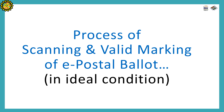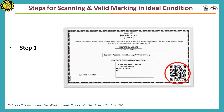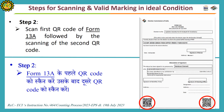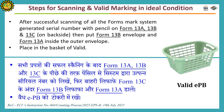Process of scanning and valid marking of E-Poster Ballot in ideal condition. First, scan the QR code of the outer envelope, that is form 13C. Open it and take out form 13A and form 13B. Then scan the first QR code of form 13A, followed by the second QR code, then scan the QR code of form 13B. After successful scanning, mark the system-generated serial number with pencil on form 13A, 13B, and 13C. Then put form 13B and 13A back inside form 13C and place it in the basket for valid E-PB.